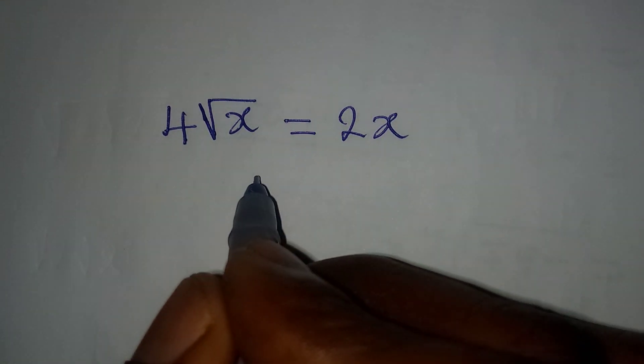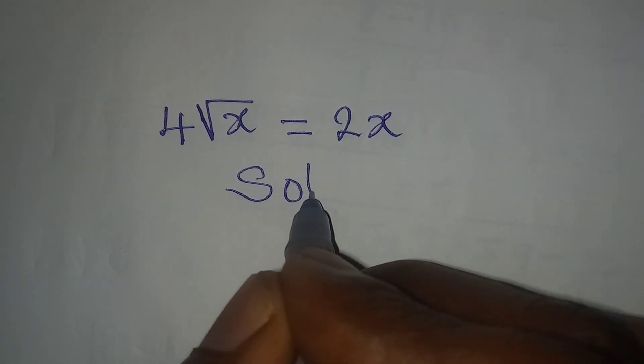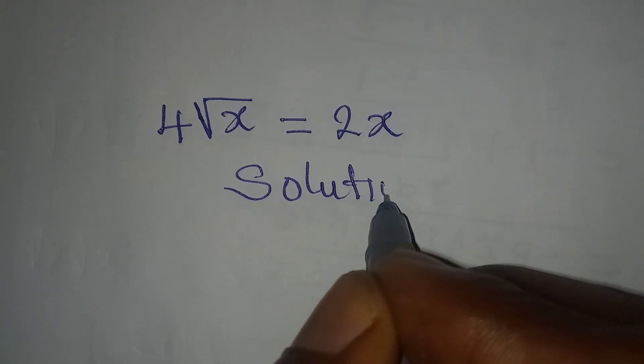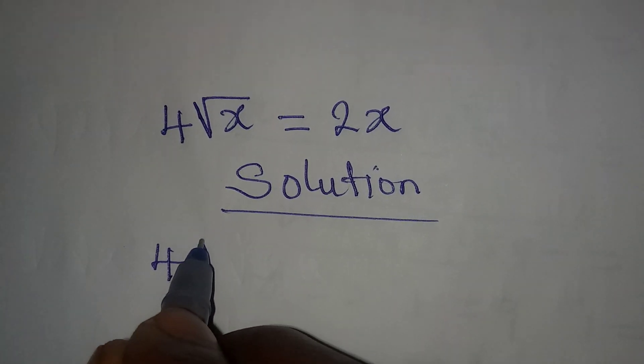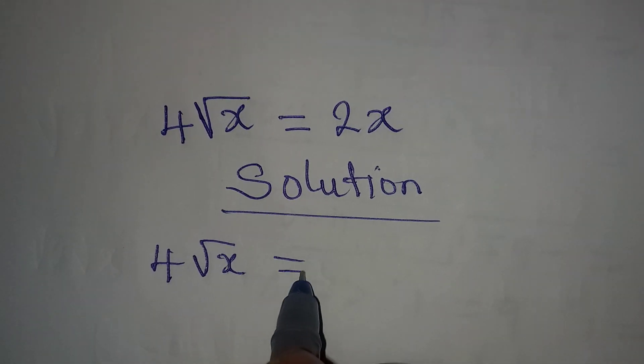Hello everyone, let us provide the solution to this problem. We have 4√x = 2x.